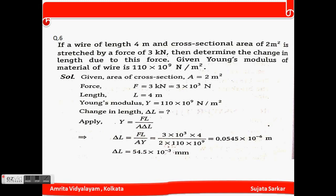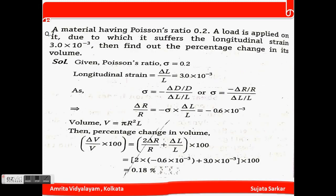Question number 6: A wire of length 4 m and cross-sectional area 2×10⁻⁶ m² is stretched by a force of 3 kilo Newton. Determine the change in length. Young's modulus Y = 110×10⁹ N/m² is given. Using Y = FL / (A·ΔL), we get ΔL = FL / (AY) = 54.5×10⁻³ mm.